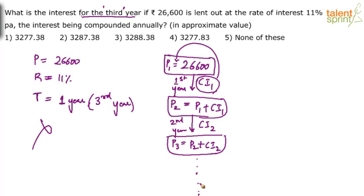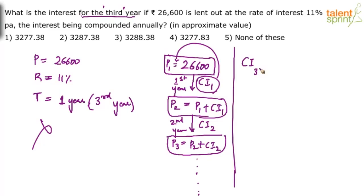So how do we solve this? In one line: CI of the third year equals 11% of the third year's principal. We will get 11% of the third year's principal.